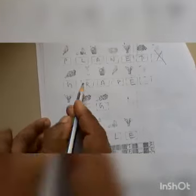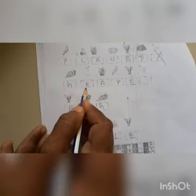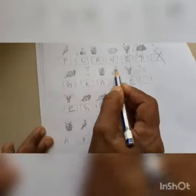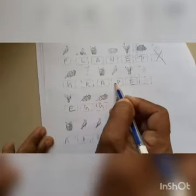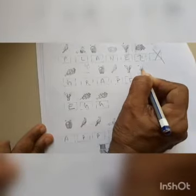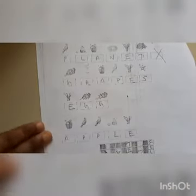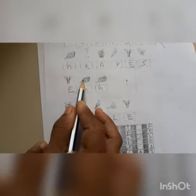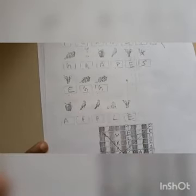Here is grapes picture, so G. Then rabbit, so R. Apple, so A. Parrot, so P. Elephant, so E. So G-R-A-P-E, Grape. Then sun, so S. Elephant, so E. Grapes, so G. So it becomes E-G-G, Egg.